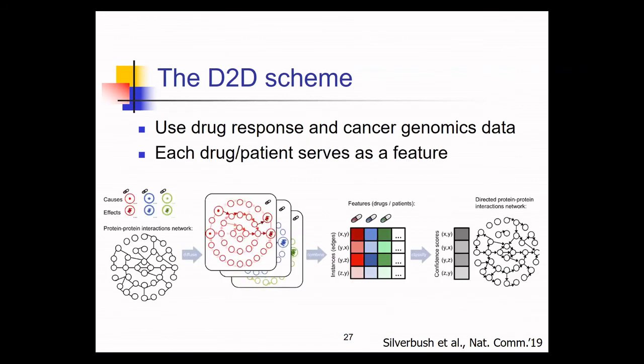Now, each source of information, so be it a drug or a patient, allows us to score all the edges in the network. So how do we account for all of them together? We simply view them as features and we learn a classifier that learns to automatically weigh them in order to produce the final prediction. So we call this the diffuse to direct or D2D scheme.